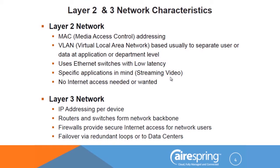Layer 2 networks use Ethernet switches with low latency — that's the good thing about Layer 2. Here at AirSpring, we have two 48-port switches covering both sides of the building, interconnected with a fiber connection running at a gig. Everybody sees everybody very quickly. It's usually application-minded these days — running streaming video multicast between district offices or providing backup for Internet access. A lot of people coming to you for Layer 2 networks, and we'll see acronyms like VPLS that describe that type of Layer 2 network.